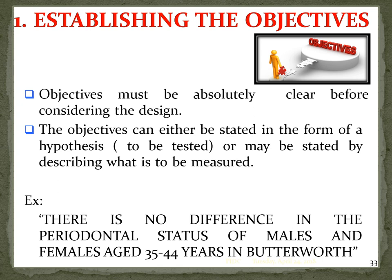Establishing the objectives: the objective must be absolutely clear before considering the design. Objectives can be stated in the form of a hypothesis or by describing what is to be measured. For example: 'There is no difference in the periodontal status of males and females aged 35 to 44 years in Butterworth.' This is a null hypothesis. If after your survey you find a difference, you reject the null hypothesis and accept the alternative hypothesis.